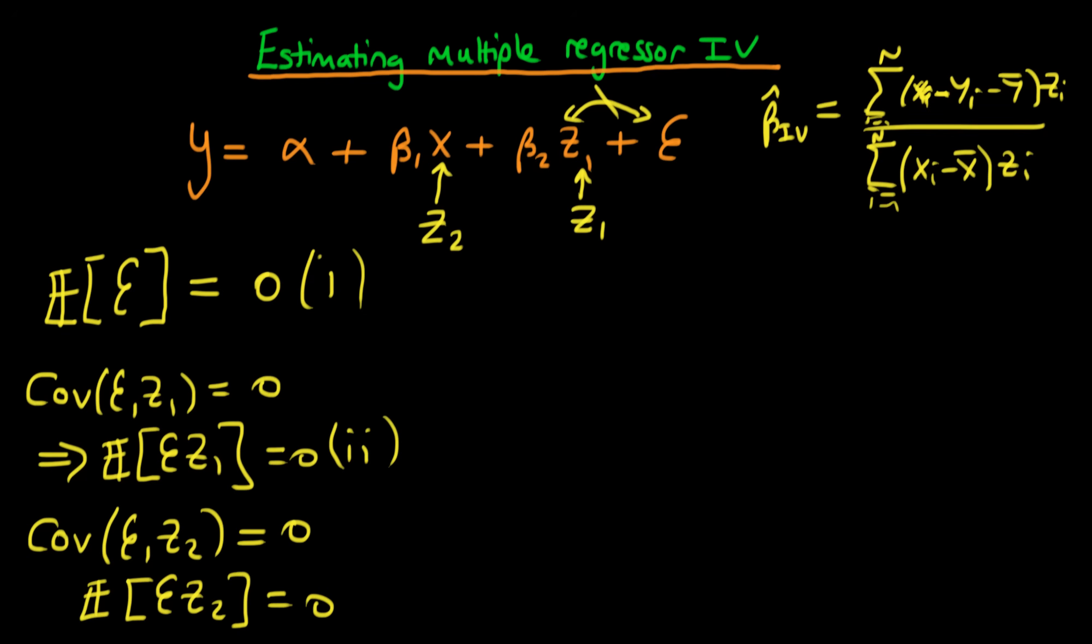So in order to estimate the parameters alpha, beta1, and beta2 using IV estimation, then what we do is we take the sample analogs of each of these three conditions.